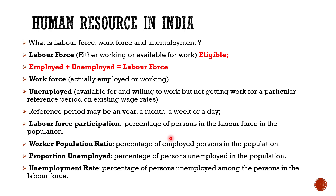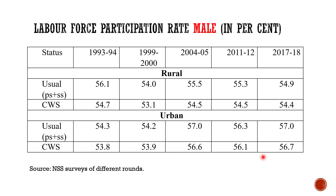The unemployment rate, however, is very different from proportion unemployed. The unemployment rate is the percentage of persons unemployed among persons in the labor force — so the base here is labor force, not total population. This means the unemployment rate could be higher than the proportion unemployed, because the base for unemployment rate is smaller (labor force), while for proportion unemployed the base is larger (total population).